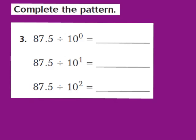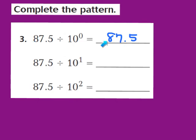We're going to start out — the first part is 87 and 5 tenths divided by the zero power of 10. I'm going to write down 87 and 5 tenths. Because my first exponent is a zero, I don't need to move the decimal at all. So 87 and 5 tenths divided by 10⁰ is still 87 and 5 tenths. Remember, the zero power of 10 equals the whole number 1, and dividing by 1 doesn't change the value.